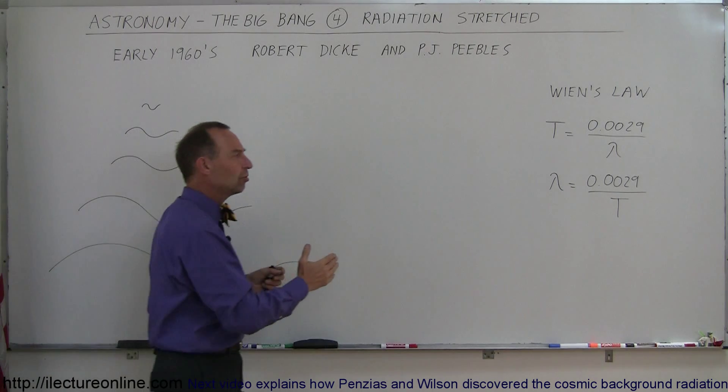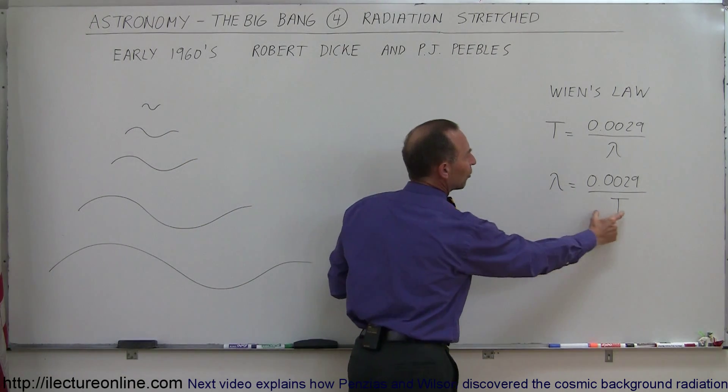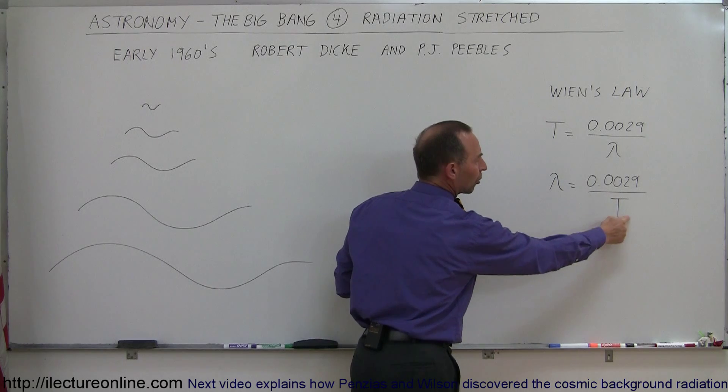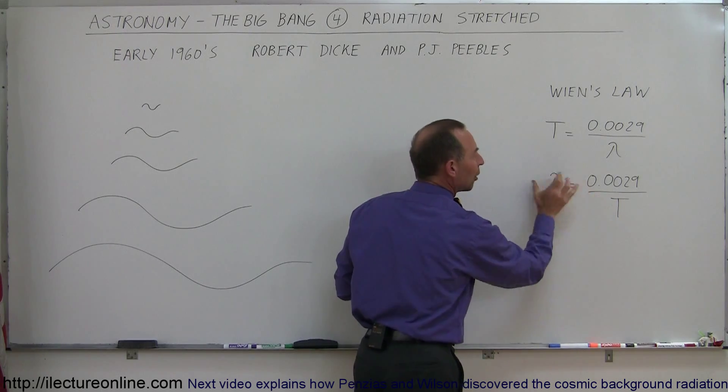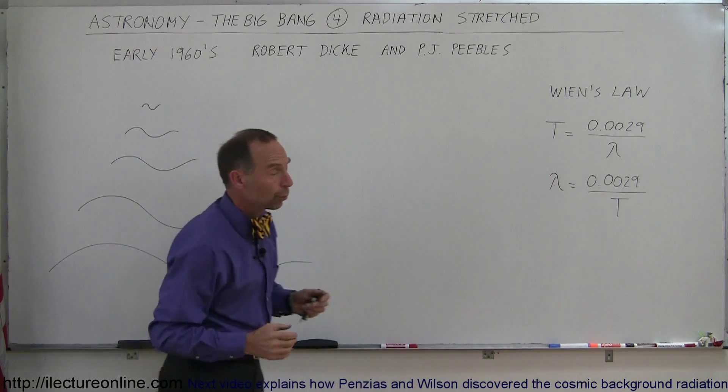Again, if you look at Wien's Law, if the wavelength gets bigger, that is because the temperature gets smaller. A smaller T in the denominator will give you a bigger wavelength, according to Wien's Law.